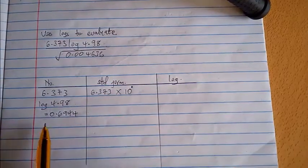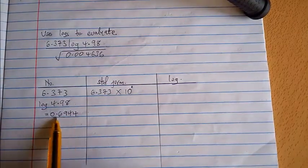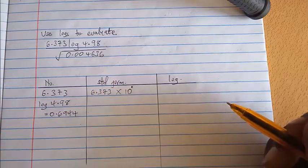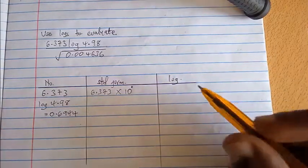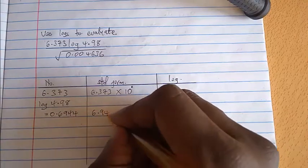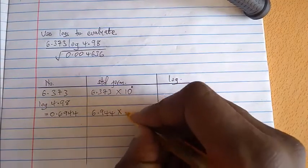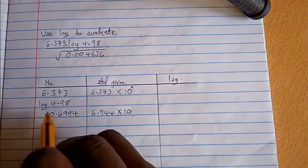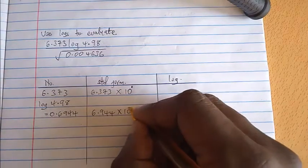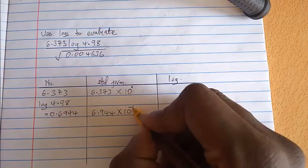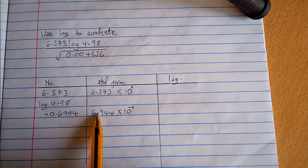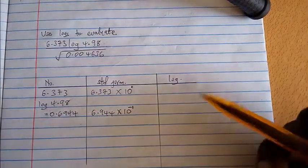Now the next thing we'll have to do is to write this number in standard form, and when we write that in standard form it will be 6.944, then we have to multiply that by 10. Now the decimal point has moved from the left towards the right therefore that will be by one, it has only moved one step towards the right.